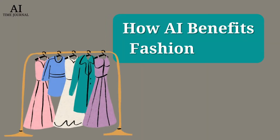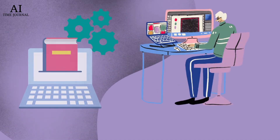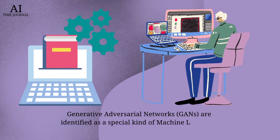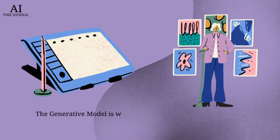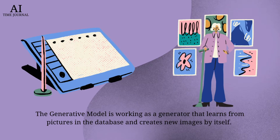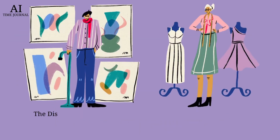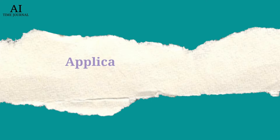Generative adversarial networks (GANs) are a special kind of machine learning composed of two adversarial models: the generative model and the discriminative model. The generative model works as a generator that learns from pictures in a database and creates new images by itself. The discriminative model works as a critic that identifies whether the pictures generated are real or fake.